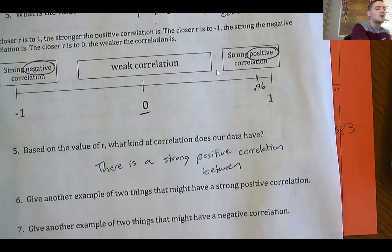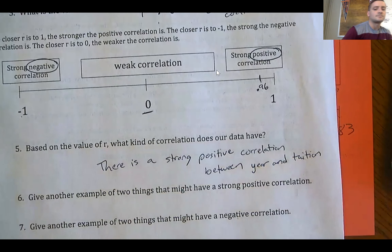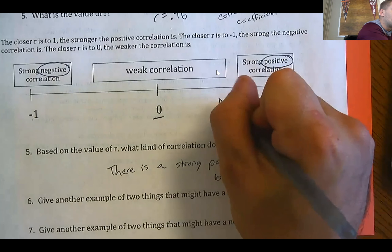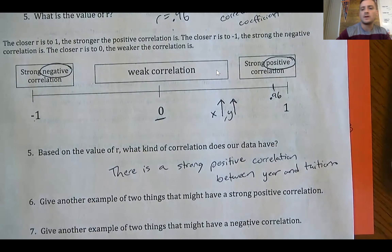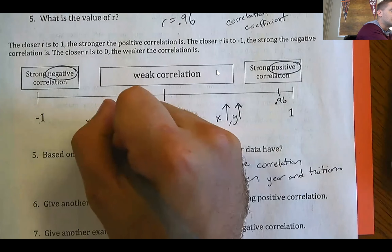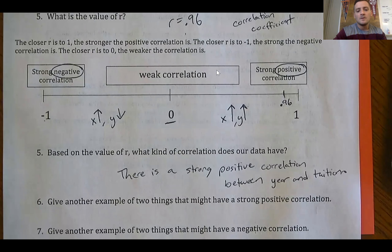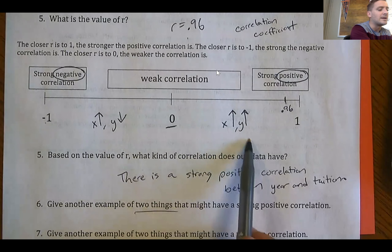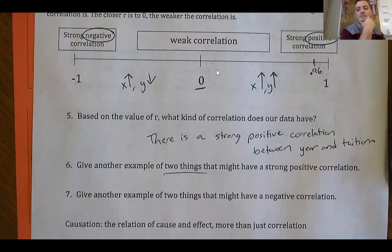Our problem was about the year and the tuition, so there is a strong positive correlation between the year and tuition. If you have a positive correlation, as one variable goes up the other variable also goes up — as x gets bigger, y gets bigger. A negative correlation means as x gets bigger, y goes down. For example, as year increased, tuition increased — that's why we had a positive correlation.